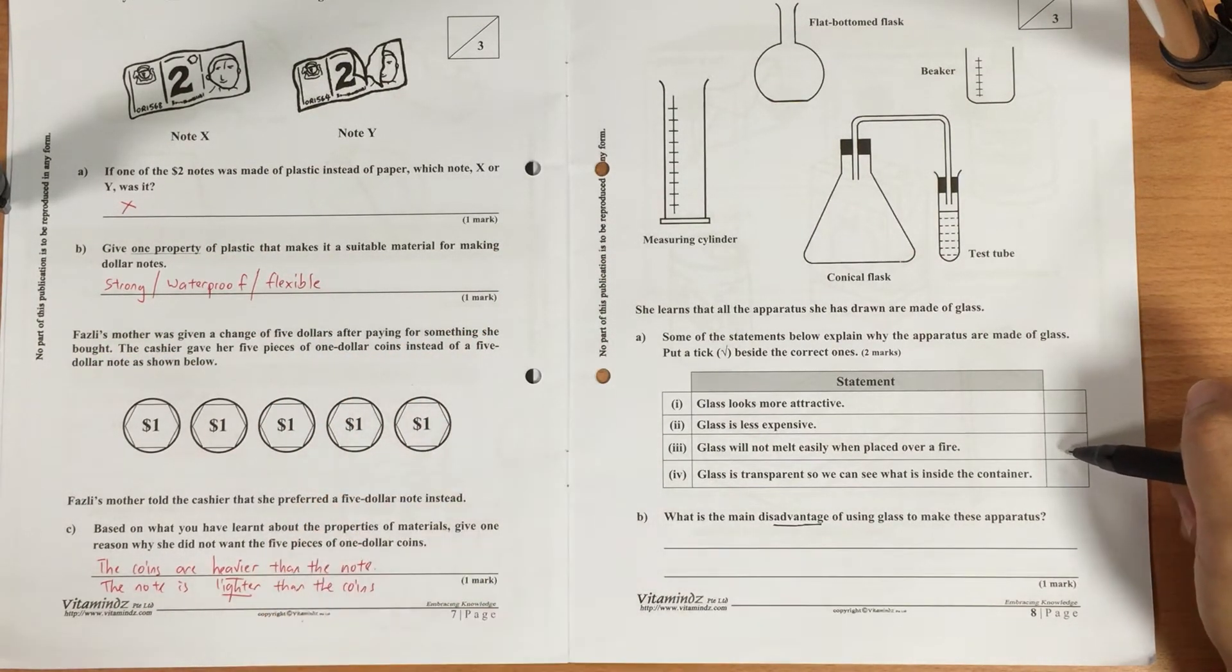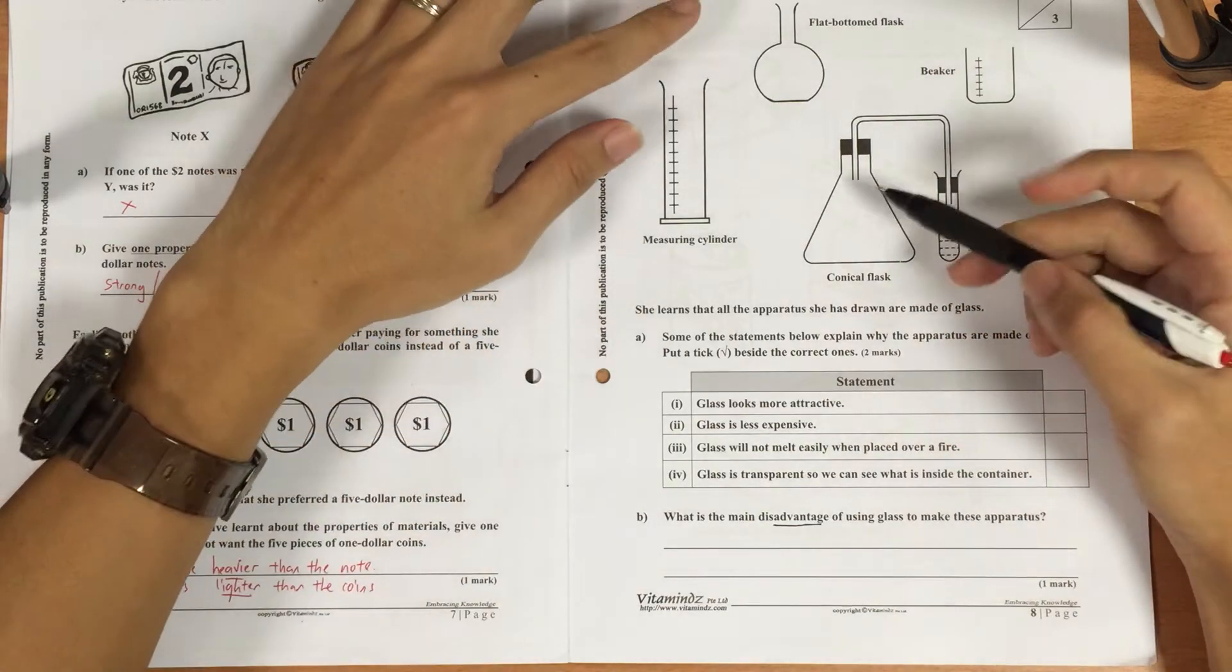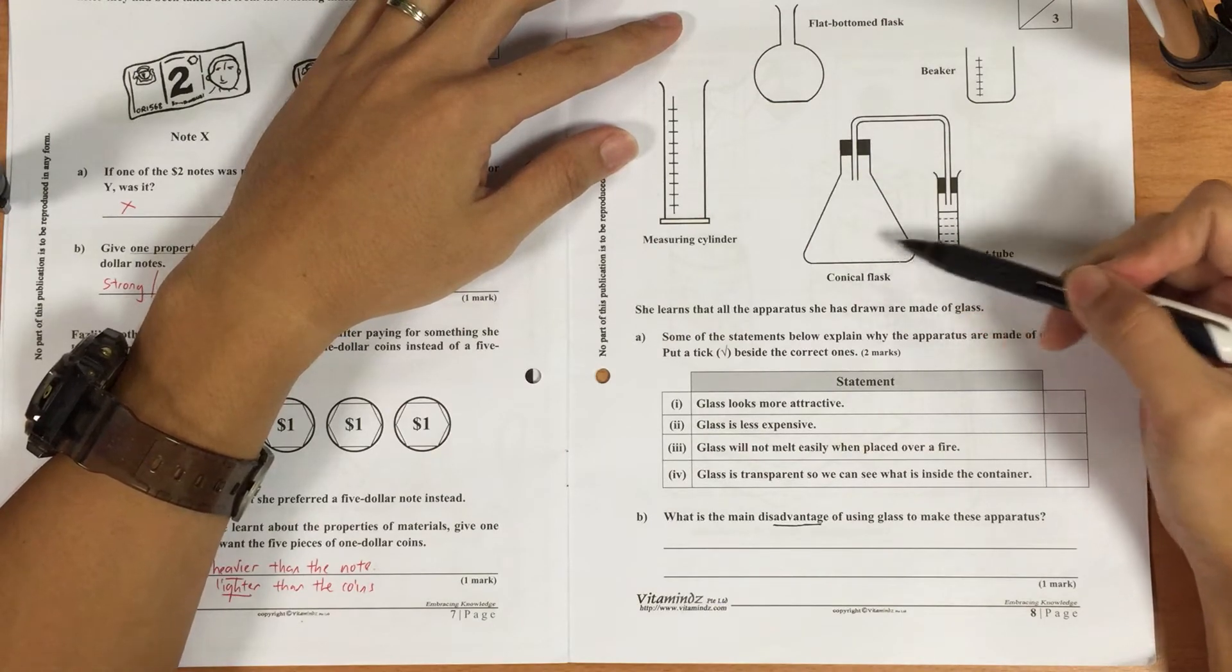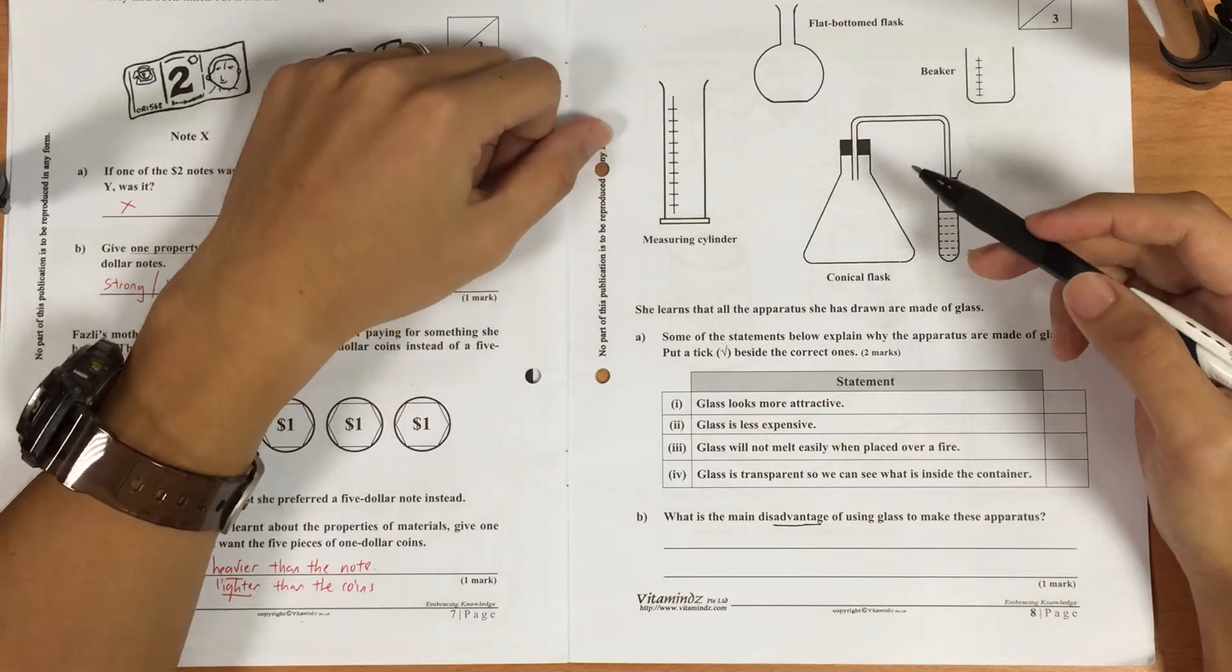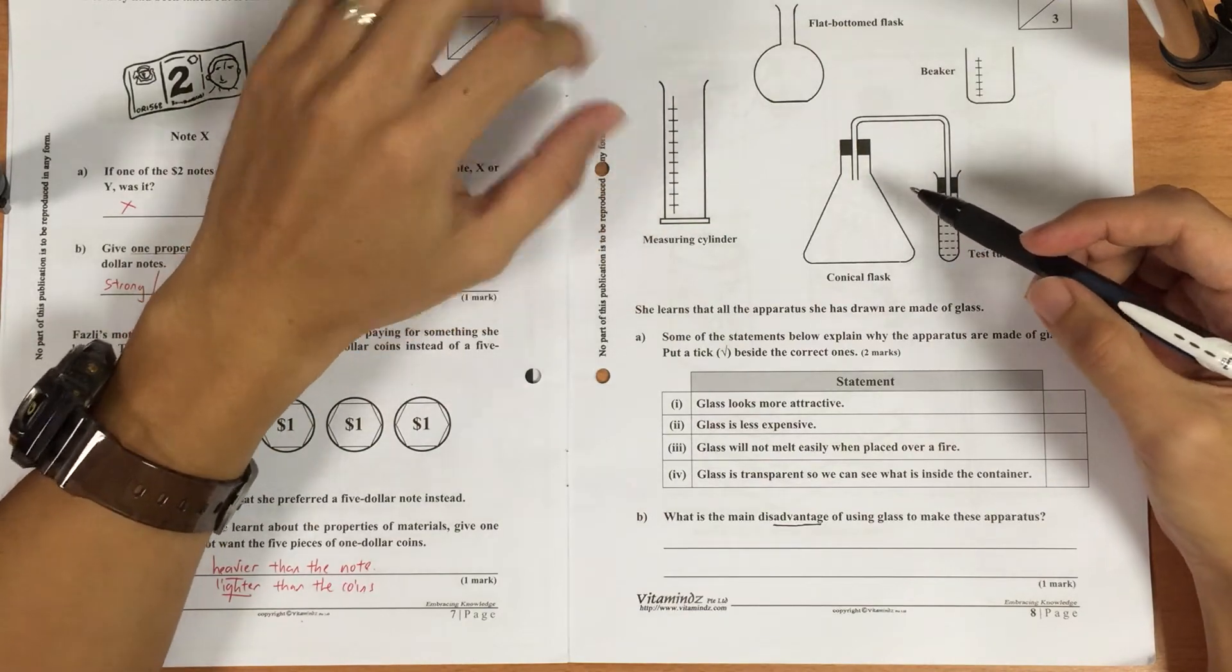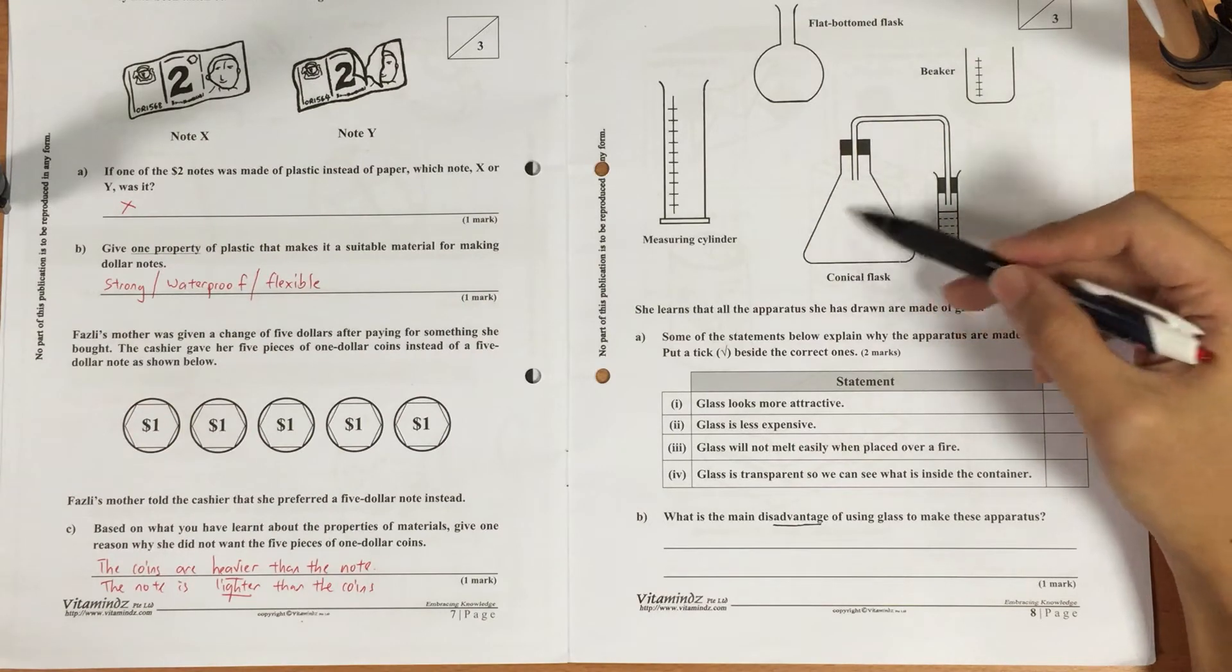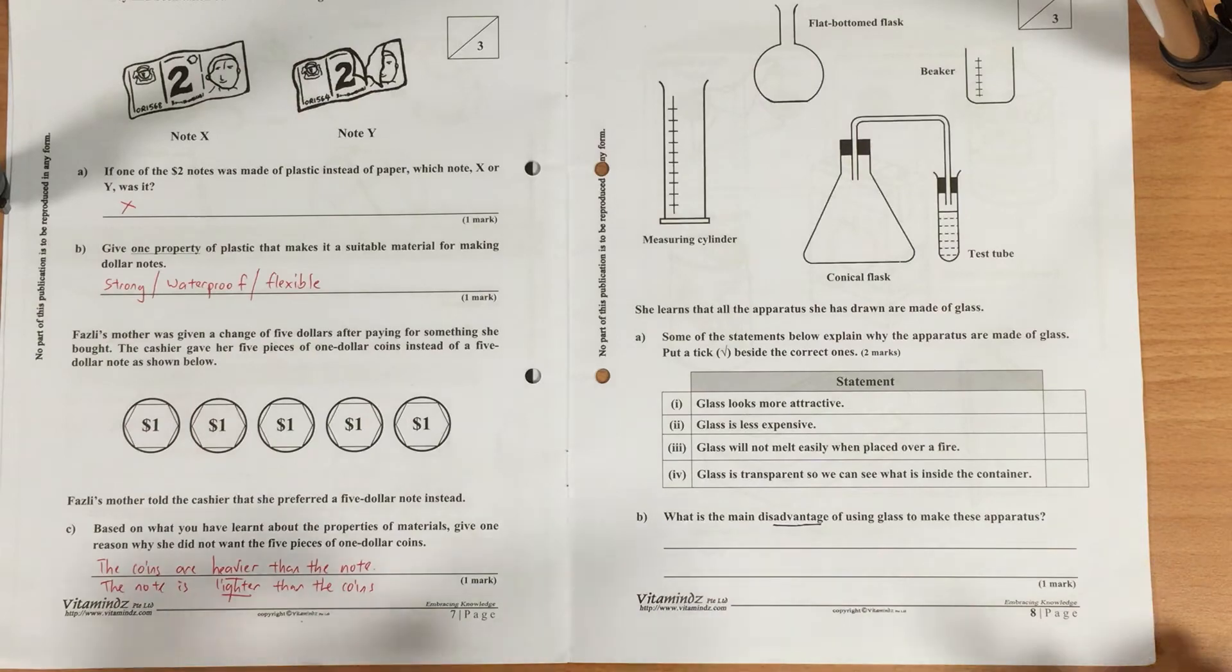Many of you also missed out this part: glass will not melt easily when placed over a fire. Many of this apparatus, for example the conical flask, sometimes we need to boil some of the chemicals or boil the water, so this material must be able to stand the heat so that it will not melt easily. Can you imagine if I'm boiling some water and it starts to melt? Obviously that's not going to be such a pleasant sight.